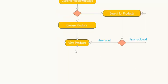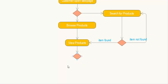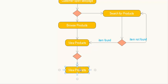After viewing the product, the customer reaches another decision point. They can either add the viewed product to the cart, which creates an add-to-cart activity, or they can choose not to add it and instead do more shopping.